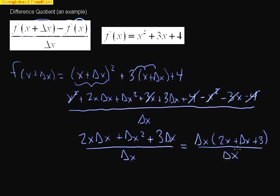And now that we have that, the delta x's can cancel out. And we're finally left over with 2x plus delta x plus 3. And that is our final answer.